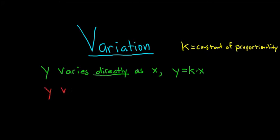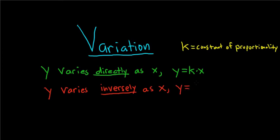The second type is inverse variation. The key word here is inversely. Y varies inversely as X — another way to say this is Y is inversely proportional to X. Then you would have Y equals K over X. So when you see inversely, you want to think about division.